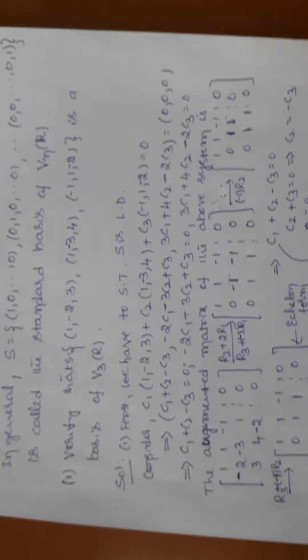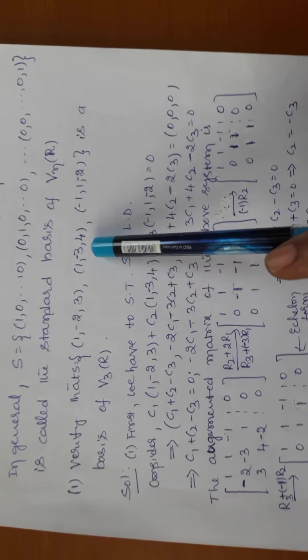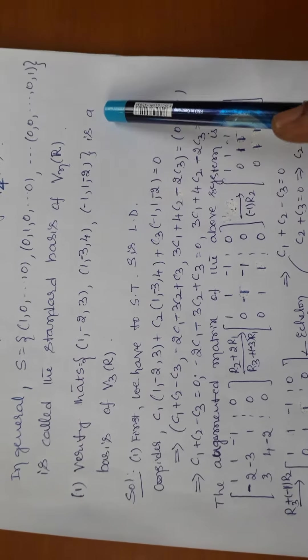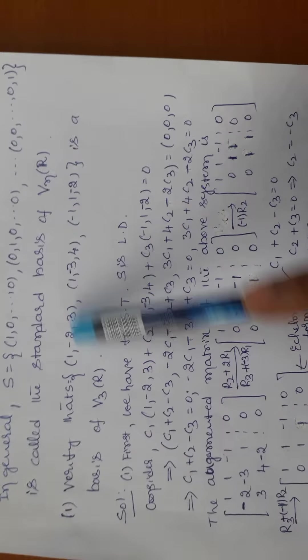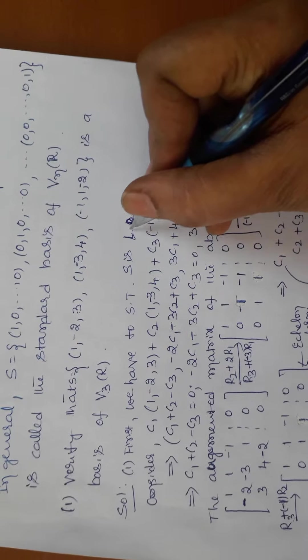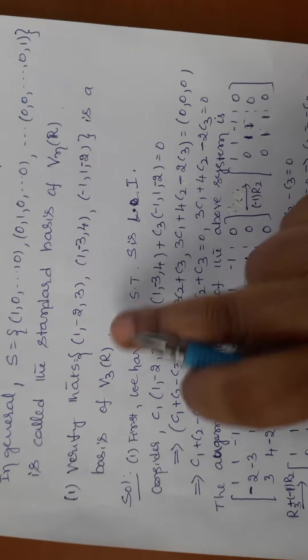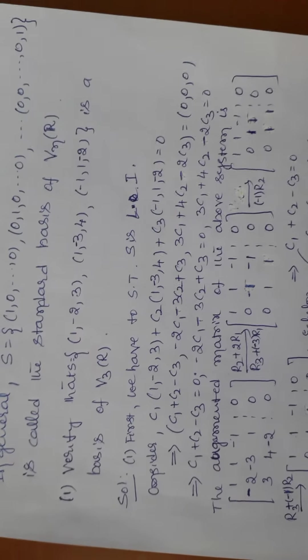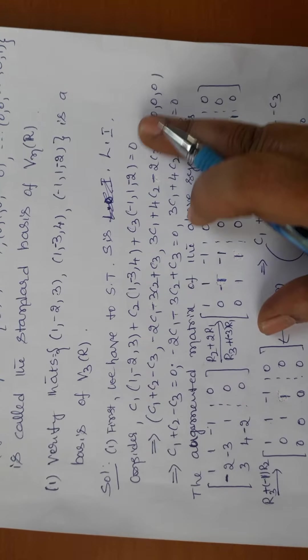Hello, welcome to the next class on vector spaces. The problem we already discussed: verify that S = {(1,-2,3), (1,-3,4), (-1,1,-2)} is a basis of V3(R). To verify this, I have to show first that S is linearly independent, and then verify that S spans V3(R). Only then can we say the given set is a basis of V3(R).